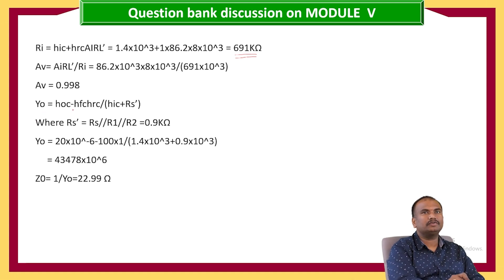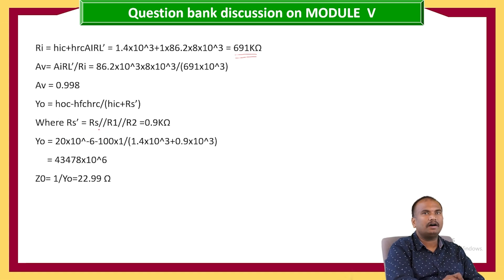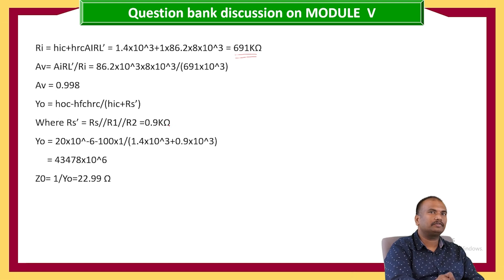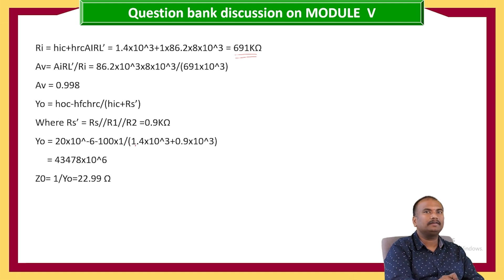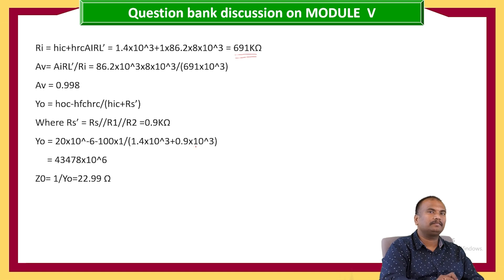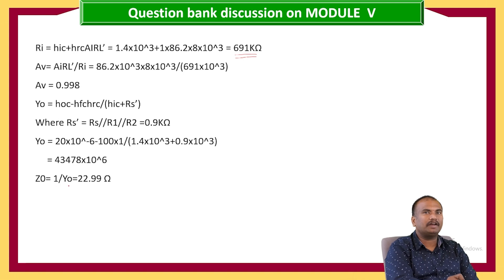Output admittance Y0 equals HOC minus (HFC times HRC) divided by (HIC plus RS'). RS' equals RS ∥ R1 ∥ R2 equals 0.9 kilo ohms. Y0 equals 20×10⁻⁶ minus 100 times 1 divided by (1.4×10³ plus 0.9×10³), which equals 43478×10⁻⁶. Z0 equals 1/Y0, which equals approximately 22.99 ohms.